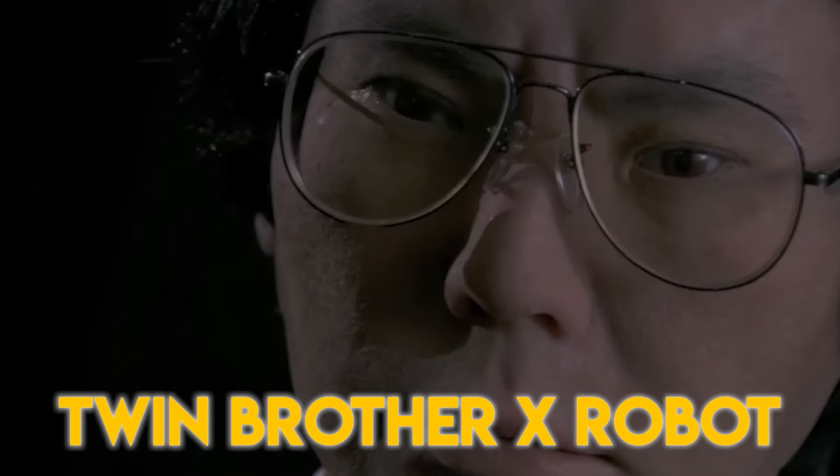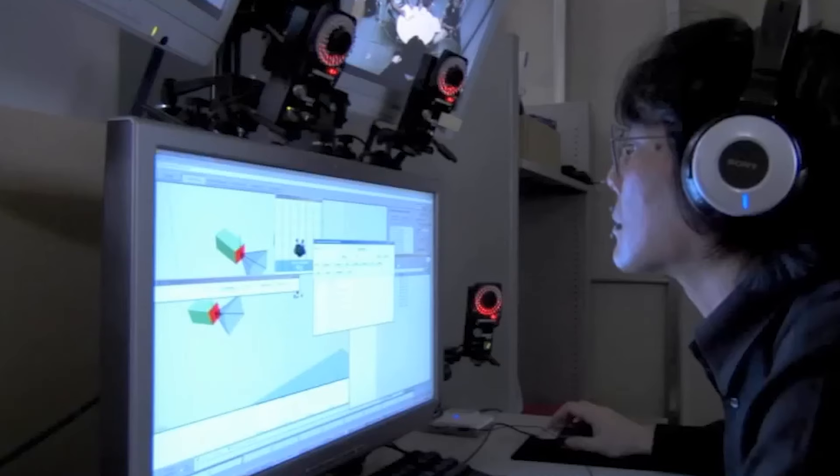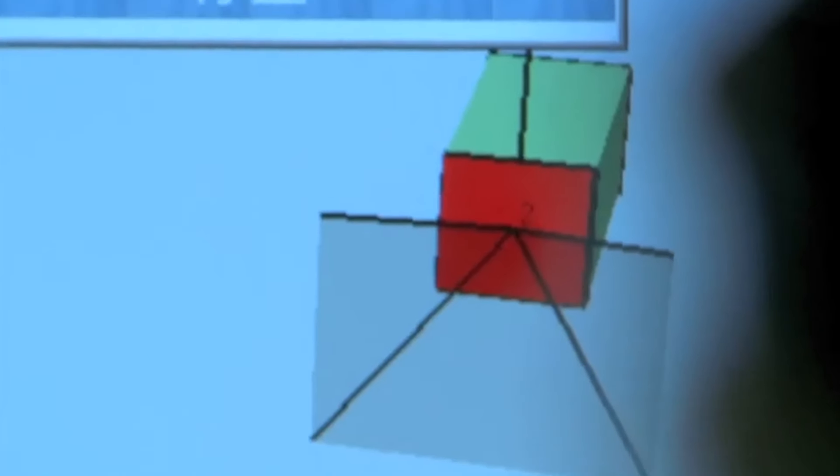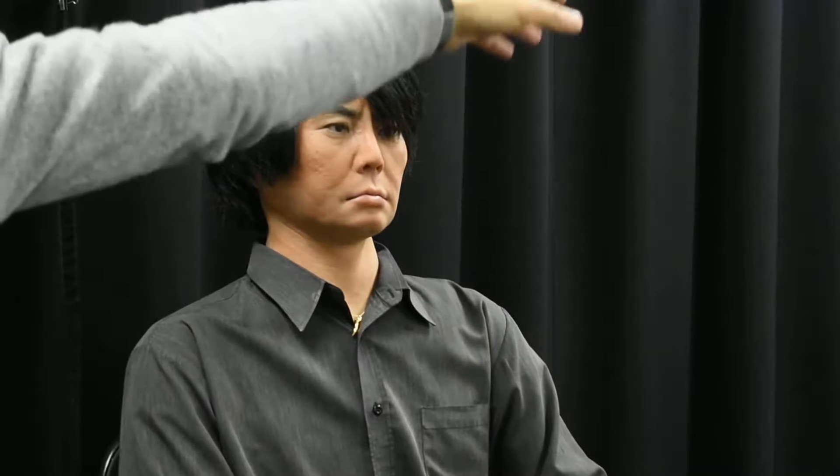China is stepping up its game in the world of robotics, and one shining example of this progress is the Twin Brother X-Robot. Created by a cutting-edge company in Delon, this humanoid robot is packed with intelligence and versatility. The Twin Brother X-Robot isn't just another pretty face, it's a master of many skills, from engaging in conversations to offering guidance in the medical field. Its ability to interact with humans through voice dialogue sets it apart, making it a valuable asset in various industries. But what really sets the Twin Brother X-Robot apart is its lifelike expressions and smart features.